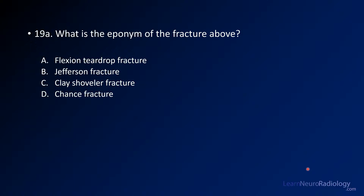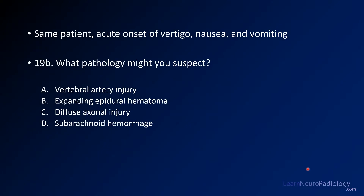Is it a flexion teardrop, Jefferson, clay shoveler, or chance fracture? To get this you have to know those eponyms. Your follow-up question is: if you have the same patient and this patient has acute onset of vertigo, nausea, and vomiting, what pathology might you suspect — a vertebral artery injury, an epidural hematoma, diffuse axonal injury, or subarachnoid hemorrhage?